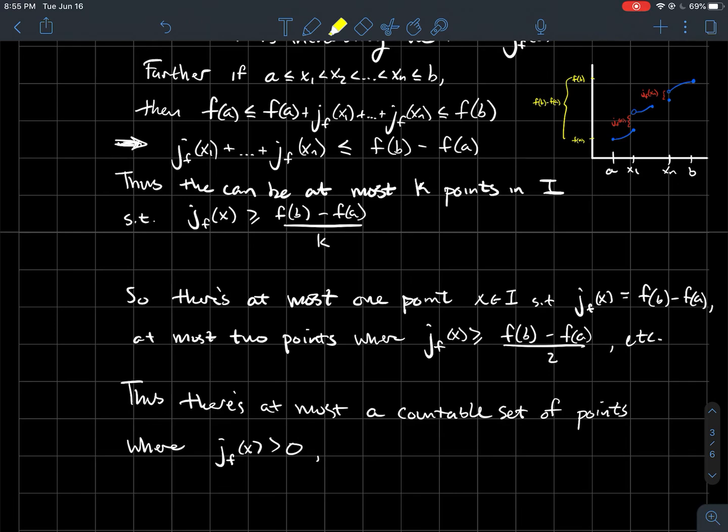So what do we got then? There's at most a countable set of points where the jump is positive. And so D though, D has to be a part of the set. D is a part of the set of all points where the jump is positive. So in other words, D is a part of a countable set. Therefore, D itself has to be countable.